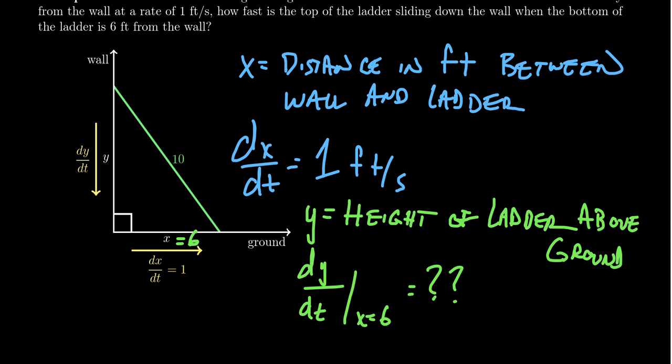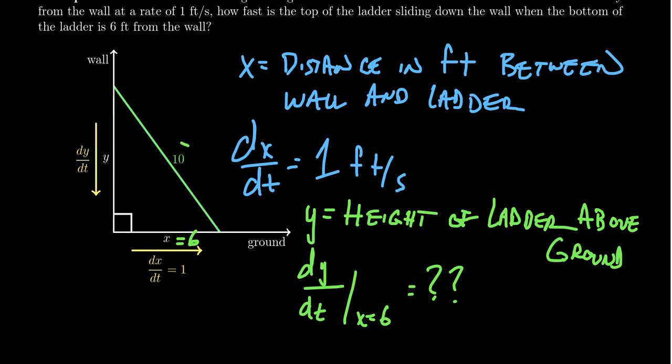The diagram is suggestive of what we should do — it forms a right triangle. Maybe some trigonometric argument could be useful, but I don't know anything about angle measures, so I don't want to use sine, cosine, or tangent. What we do know is that the ladder is 10 feet.